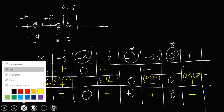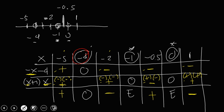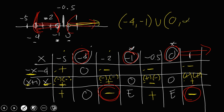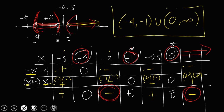The negative results are between negative 4 and negative 1, and also on the right of 0. In interval notation: from negative 4 to negative 1, union 0 to positive infinity. This is the solution.